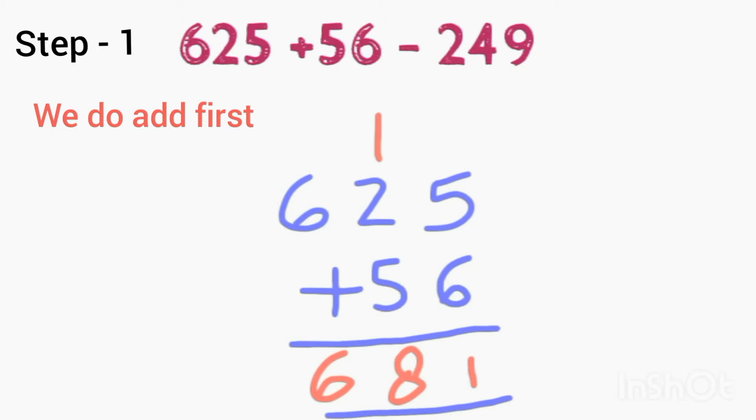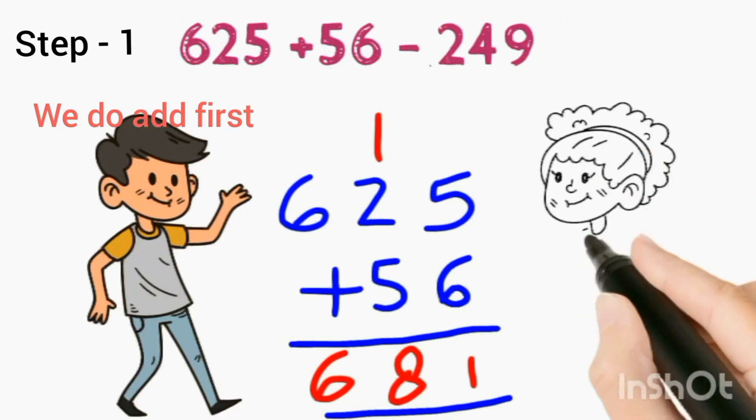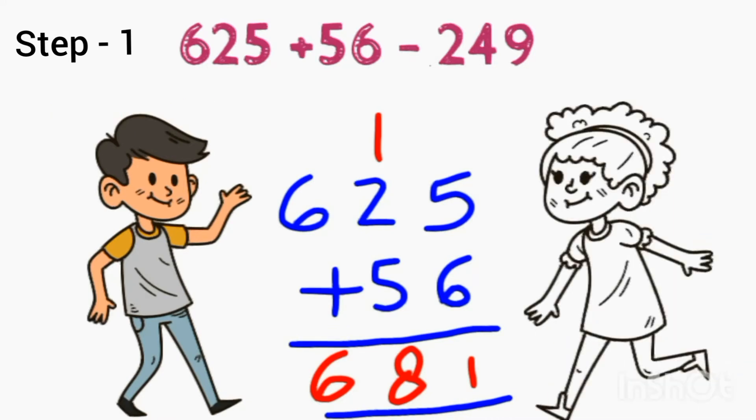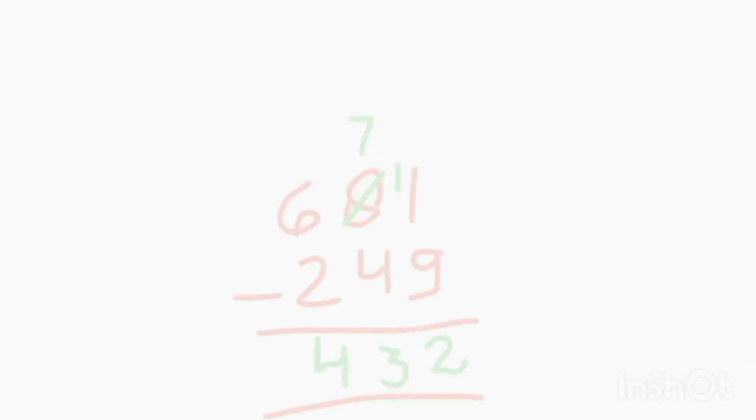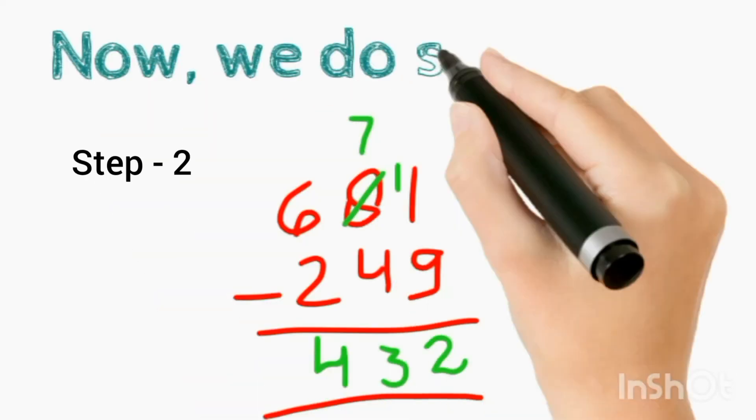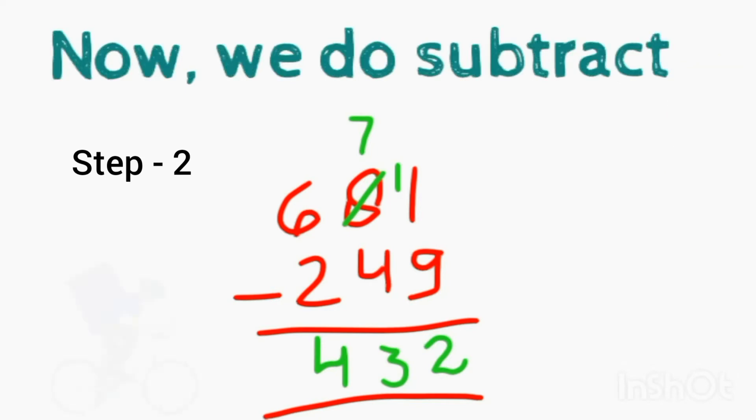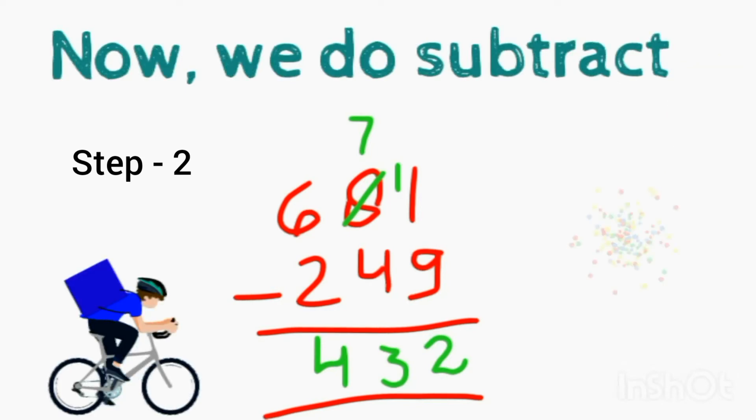625 plus 56: 5 plus 6 is 11, 5 plus 2 plus 1 is 8, and 6 is 6. Now step 2, we do subtract: 11 minus 9 is 2, 7 minus 4 is 3, and 6 minus 2 is 4.